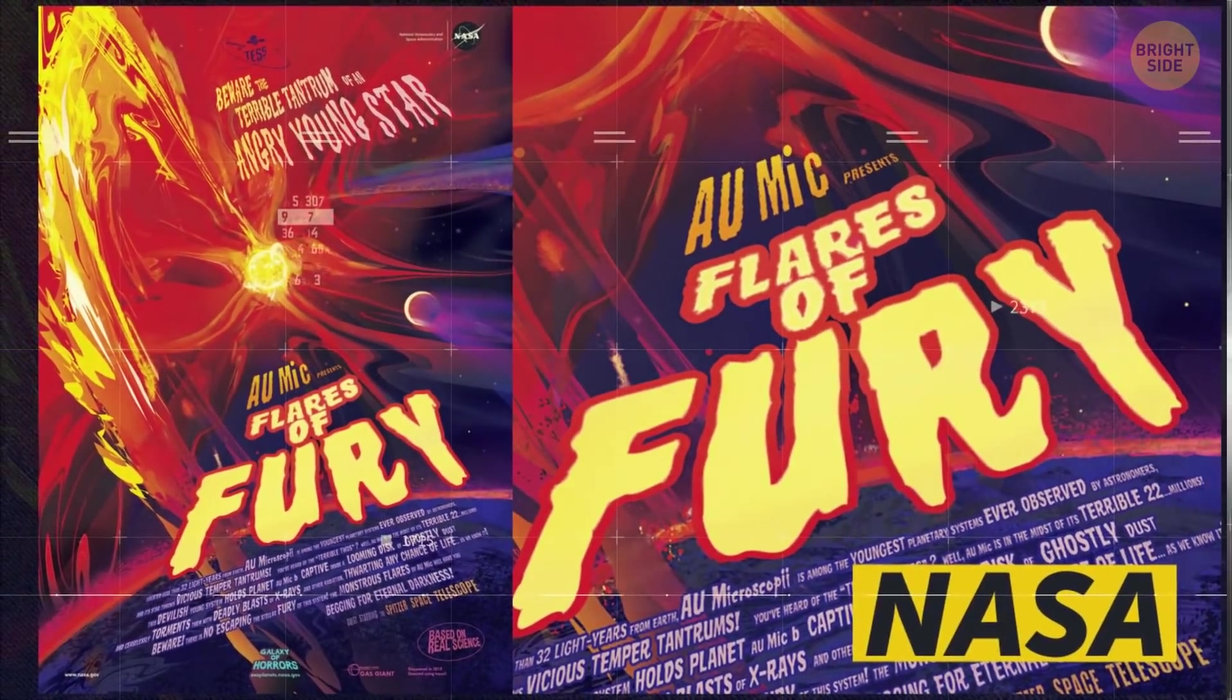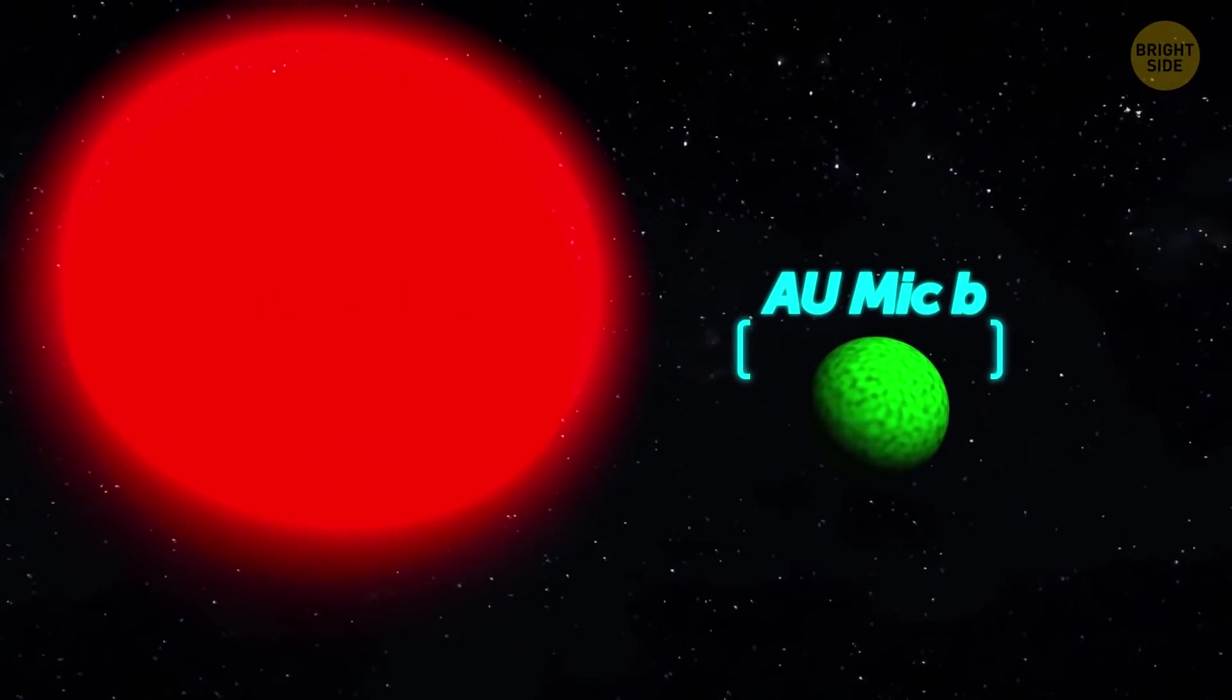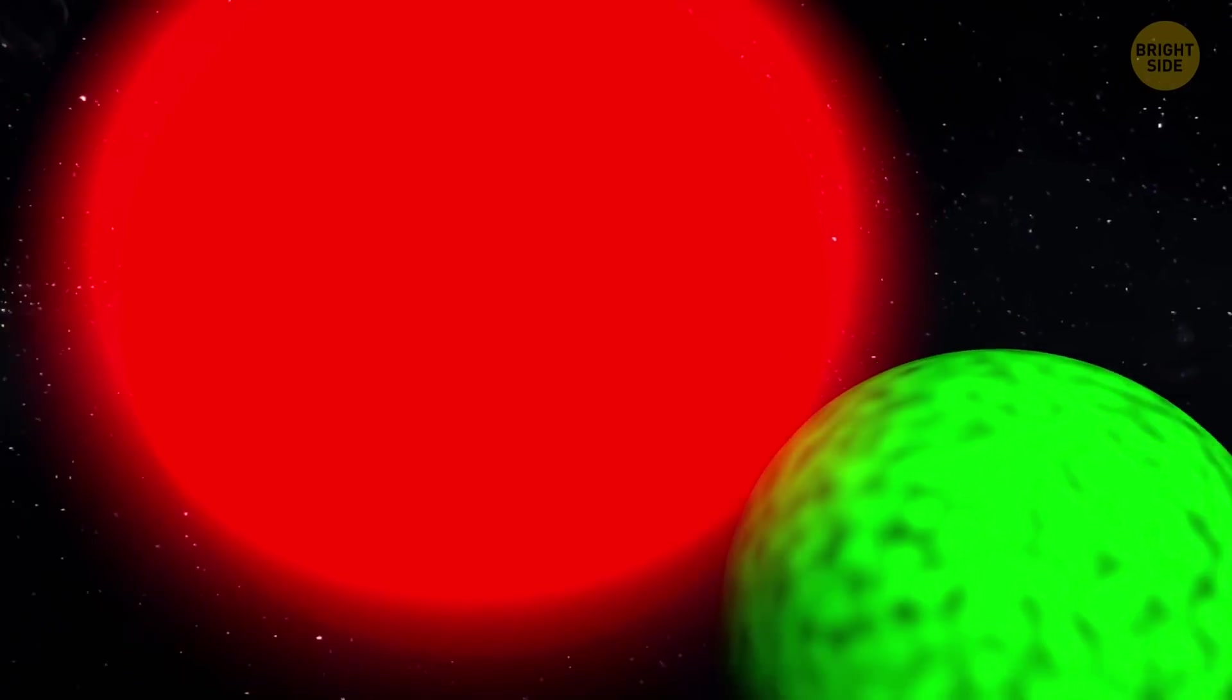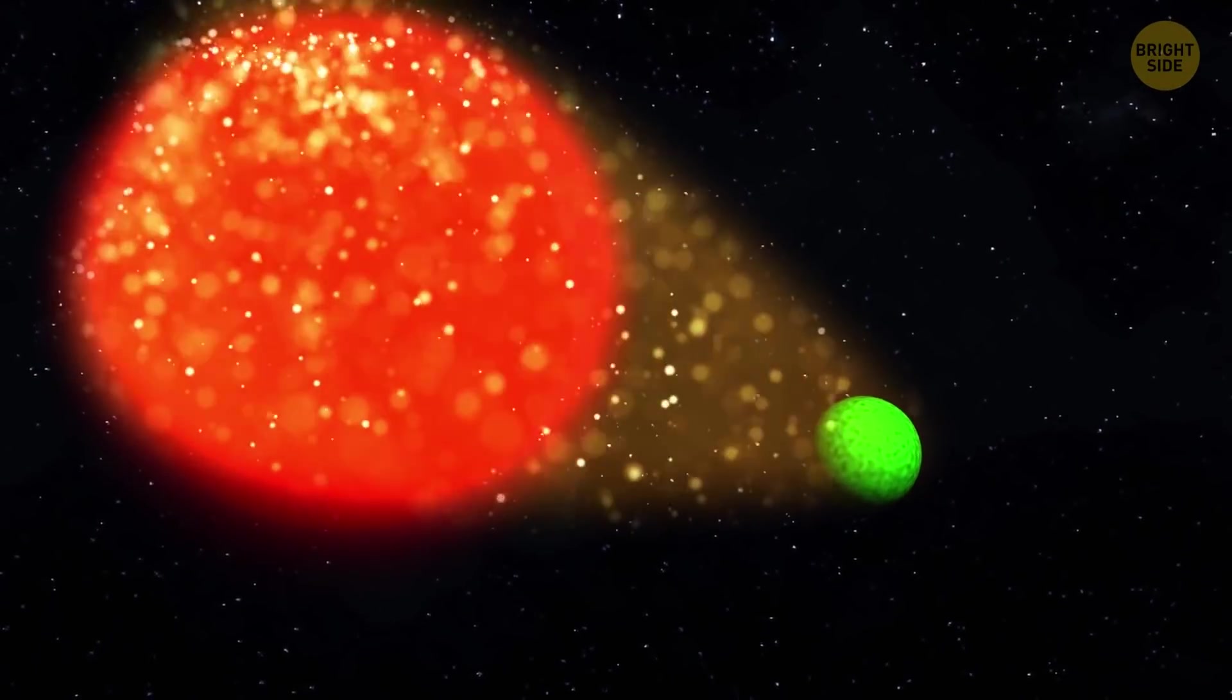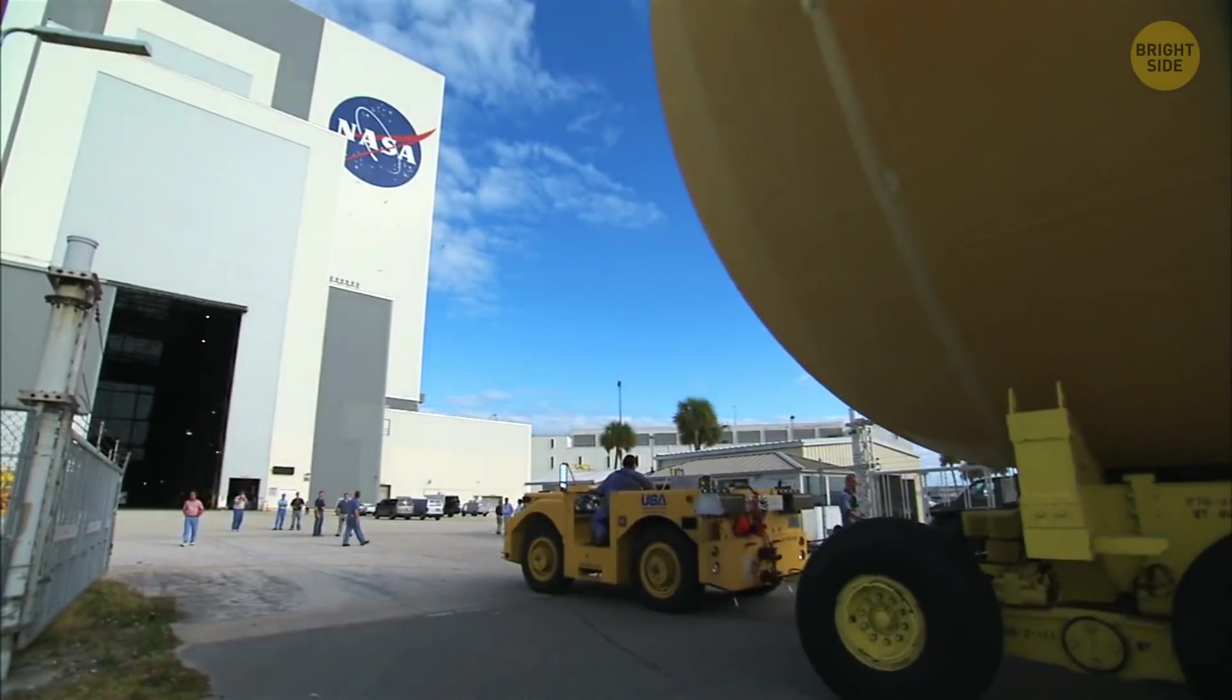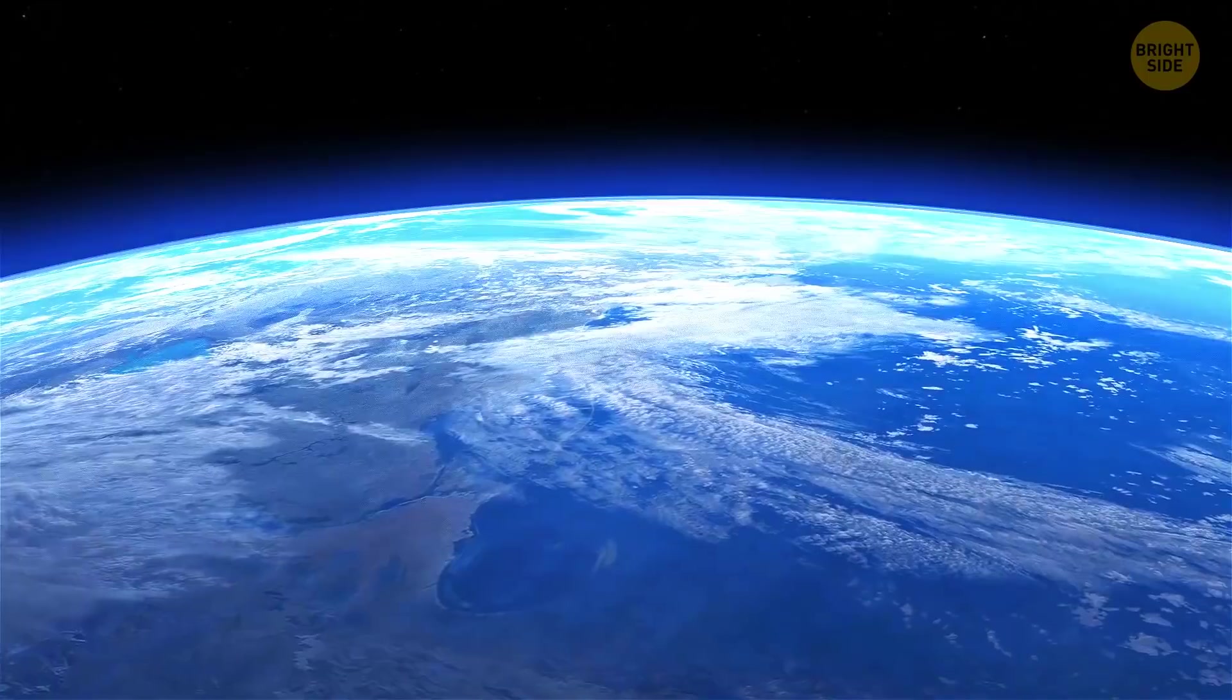NASA added a poster featuring AU Mic to its Galaxy of Horrors series because of the planet that orbits the star. AU Mic b is so close to its sun that it makes a full circle around it in just 8.5 days. Being so young, the star frequently throws tantrums, resulting in horrible doses of solar radiation storming the poor planet. As you may guess, no life is possible in such conditions. Still, the scientists are happy to have found this system because it sheds light on how stars and stellar systems are formed.